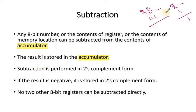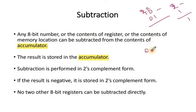First of all, we have to convert the numbers into 4-bit representation, because that is very important — otherwise we won't get the correct answer. For example, 2 is converted to 0010, and 1 is converted to 0001.